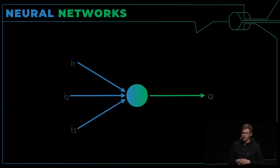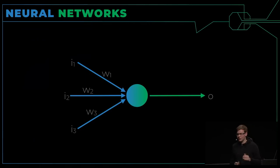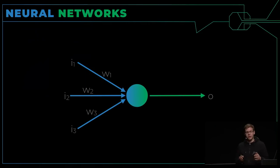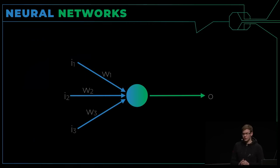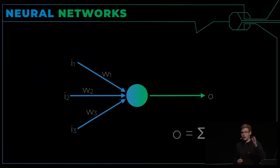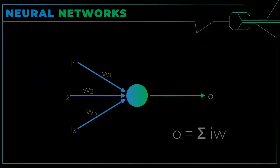Schauen wir uns auch ein paar mathematische Gleichungen an — es wird nicht sehr viele geben, also macht euch keine Gedanken. Wir brauchen noch die Gewichte, wenn wir Eingabe auf Ausgabe umrechnen wollen. Gewichte sind einfach nur Zahlen: W1, W2 und W3. Wir nehmen diese Gewichte und multiplizieren sie mit ihrer Eingabe — Eingabe 1 mal Gewicht 1, Eingabe 2 mal Gewicht 2 und so weiter. Diese Summe ist einfach unsere Ausgabe.